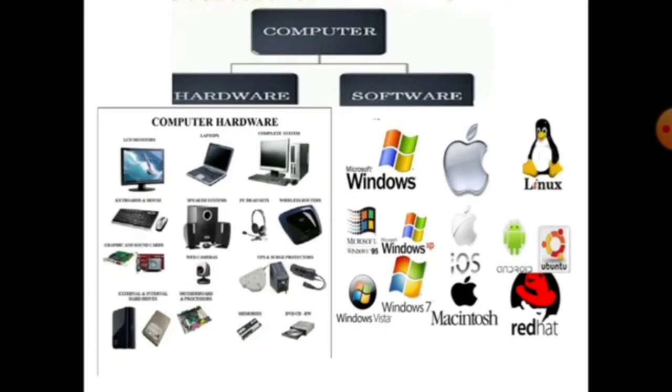Now let's move forward. Next is computer components. Computer has two main components, that is hardware and software. Those parts of computer which we can see or touch or feel, you can see here. Here are parts of computer which we can see.